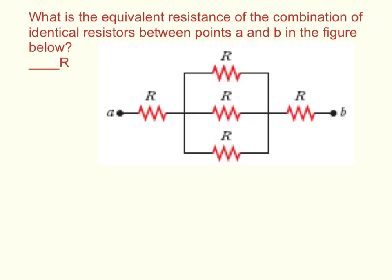What is the equivalent resistance of the combination of identical resistors between points A and B in the figure below? So what this question is wanting is just an algebraic solution.